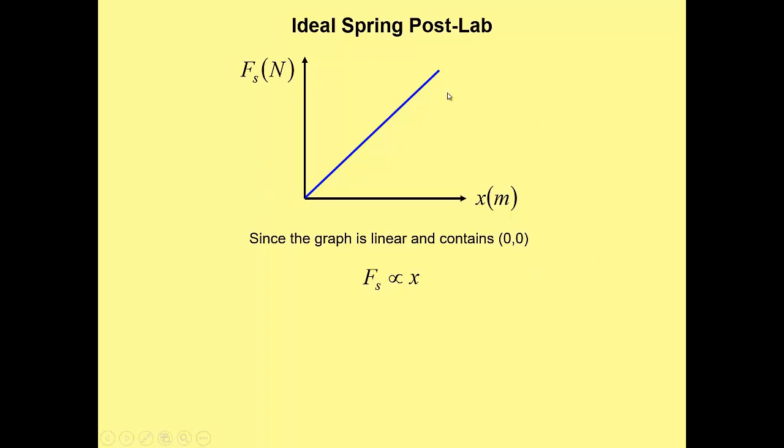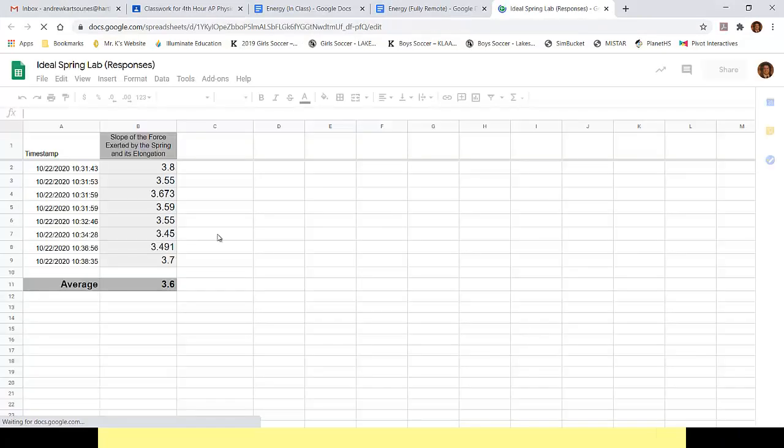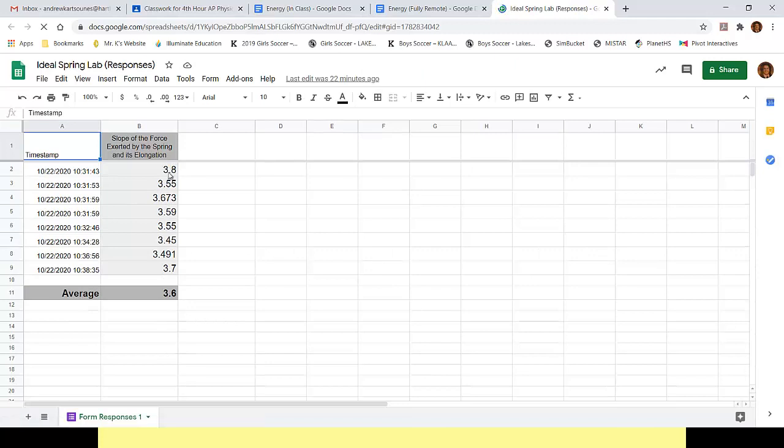So given the linear graph, we can, of course, make a y equals mx plus b math model out of this, which will allow us then to use it as a predictive tool to describe ideal springs. So the y variable in this case, what we graphed on the vertical axis, is, of course, the force exerted by the spring. That will equal your slope. And if we take a look at some of the slopes, here's one hour's worth of slopes. You'll notice that they're all fairly similar. Everyone has a three point something. So it's really that first decimal place where we start to get some disagreement. So that's why I rounded off to a single decimal place, two sig figs down here. So we get, experimentally, about 3.6.